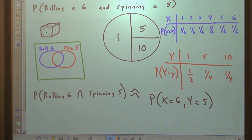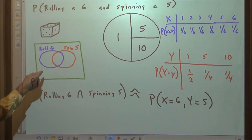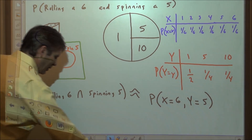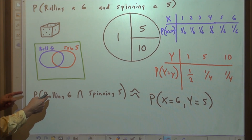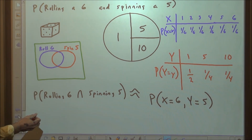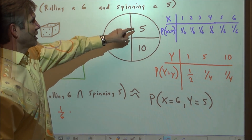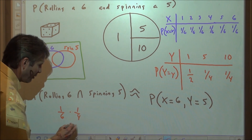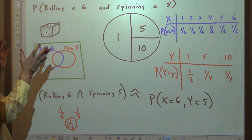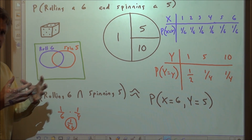Let's remind ourselves about the Venn diagram. If we have two independent events, the way to find the intersection is to multiply the two probabilities together. Taking that idea into discrete random variables: to find the probability of rolling a six and spinning a five, knowing the two events are independent, we multiply the probability of rolling a six times the probability of spinning a five.